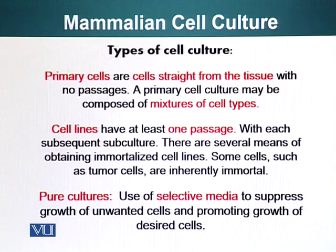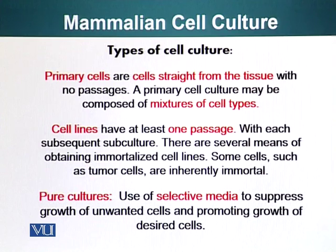Pure cultures are cultures of cells that have a single cell type. To obtain pure cultures, one way is to use reagents that promote the growth of the specific cell type you are interested in while preventing other cells from growing. You can also use different techniques — for example, magnetic sorting or cell sorting — to separate a specific type of cells.